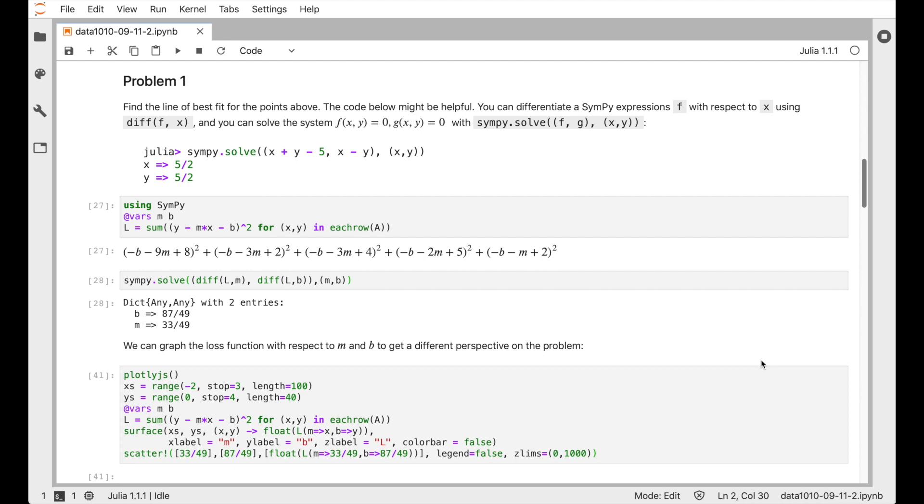Okay, so in this first problem, we're going to actually find the line of best fit above using some calculus. But instead of doing the calculus by hand, we're going to get SymPy to do it for us. And SymPy is a Python library for doing symbolic mathematics. And this package, SymPy.jl is a Julia package that wraps that one.